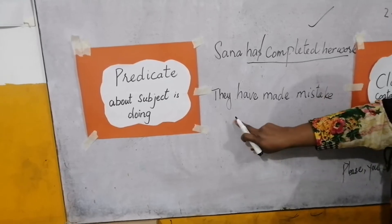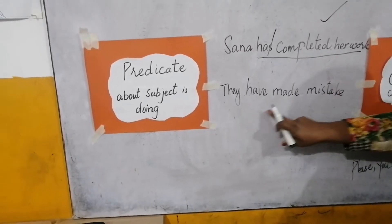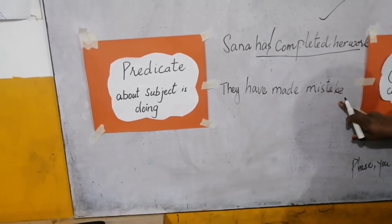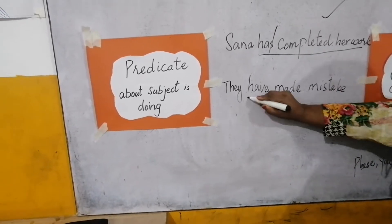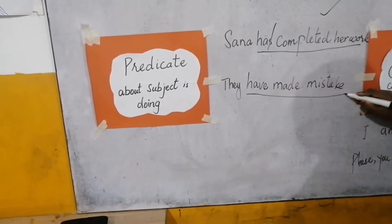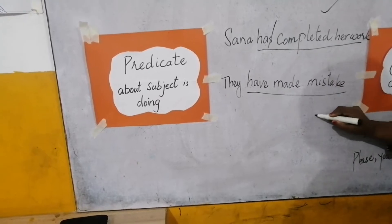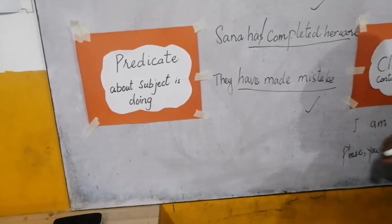In another example, 'They have made a mistake' — 'have made mistake' is the predicate. It is the rest part of the sentence excluding the subject.